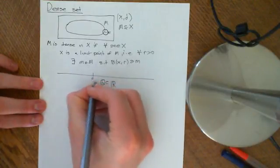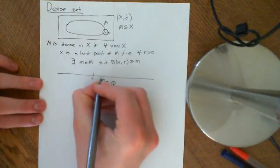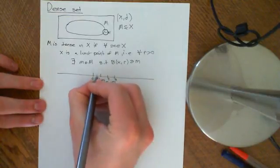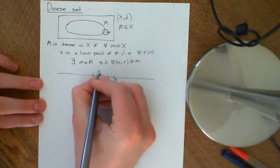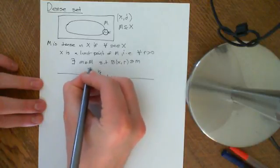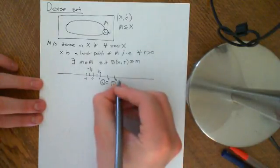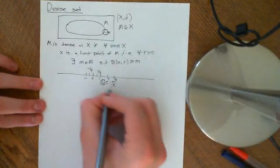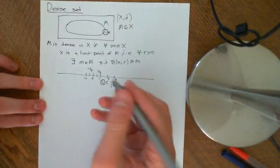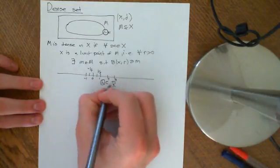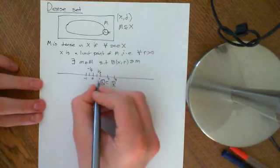So let's say here's 0 — 0 is a rational number. We've got 1 here, 2 here. Those are all the integers, but we've also got things like a half, minus 1, minus a half. All of these rationals are going to form a subset of the real numbers. Things like the square root of 2 are not rational numbers, so this is a proper subset of the real numbers.